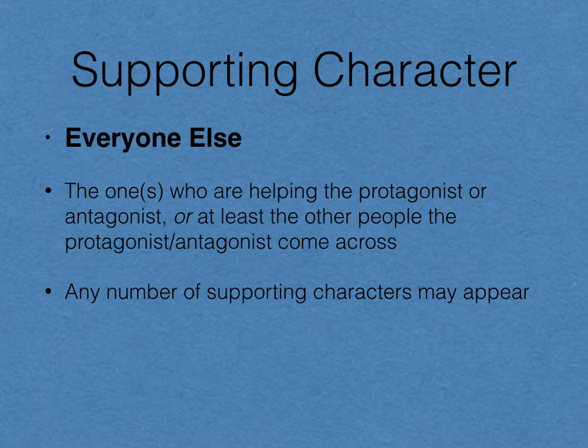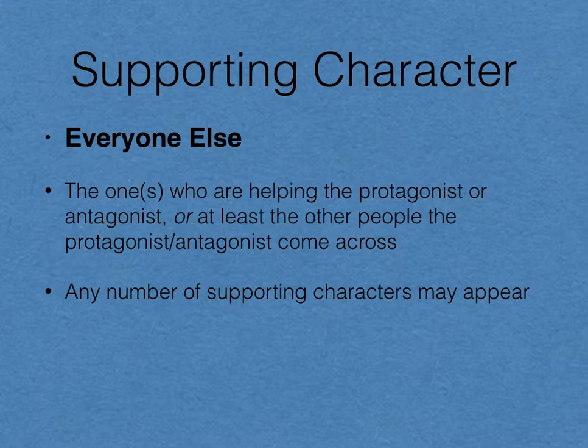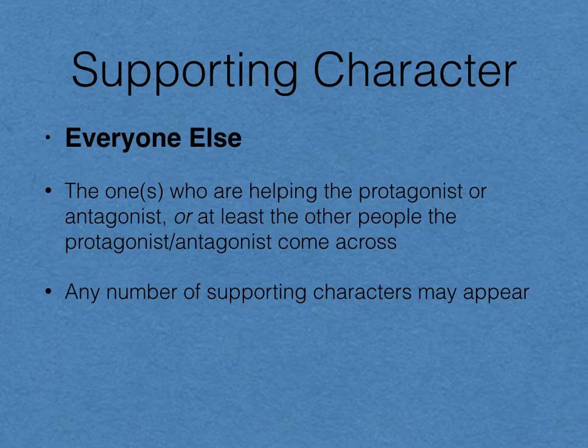Everyone else gets to be a supporting character. This is typically defined as characters who are helping either the protagonist or the antagonist, but it can also be just other people that the protagonist or antagonist come across. They might not be actively supporting either side but just happen to be hanging around in the same scene. You can have any number of supporting characters — sometimes zero, sometimes a thousand — whoever it takes to fill out those scenes.